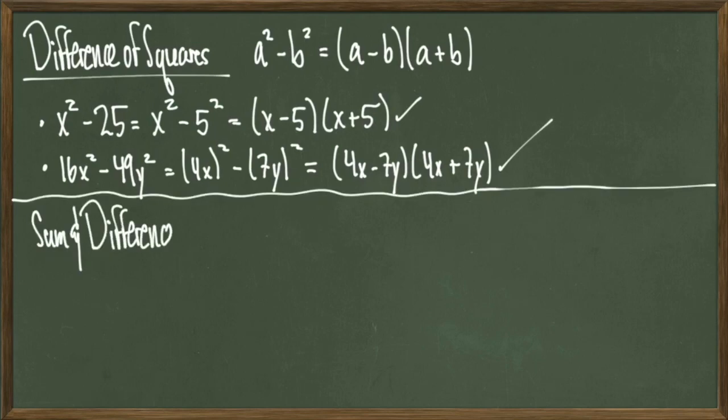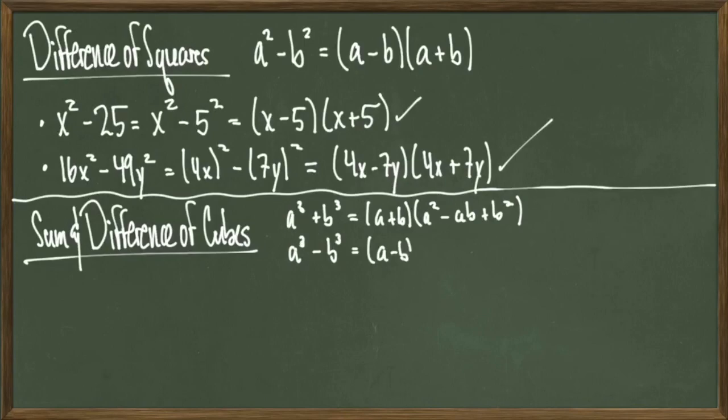Next, we'll give some formulas for the sum and difference of cubes. a cubed plus b cubed factors as a plus b times a squared minus ab plus b squared, while a cubed minus b cubed factors into a minus b times a squared plus ab plus b squared.